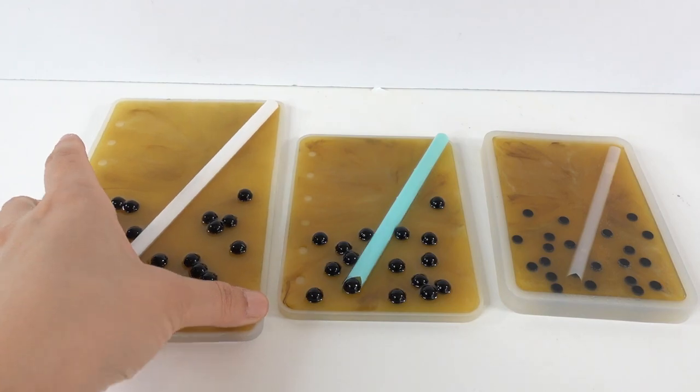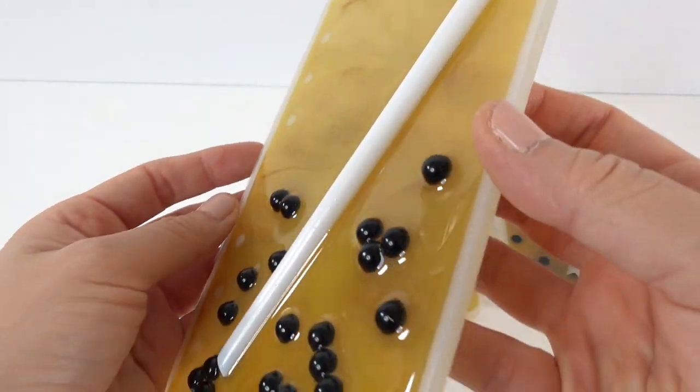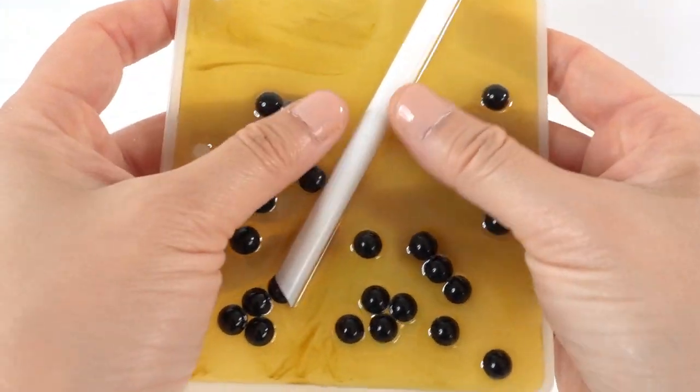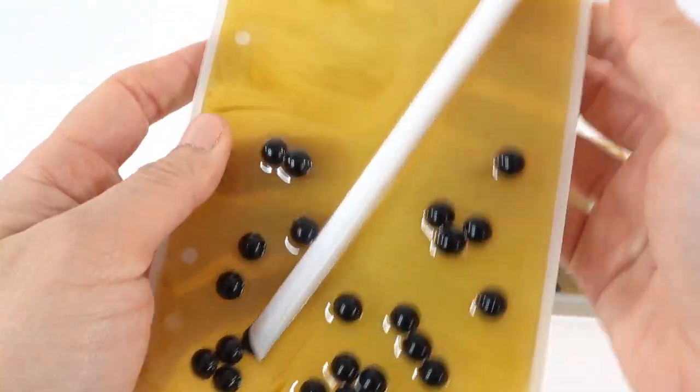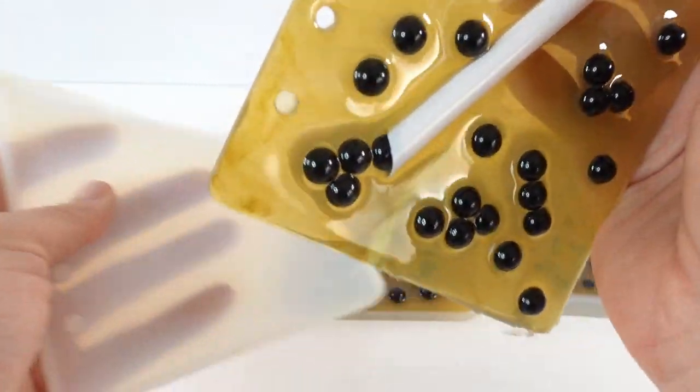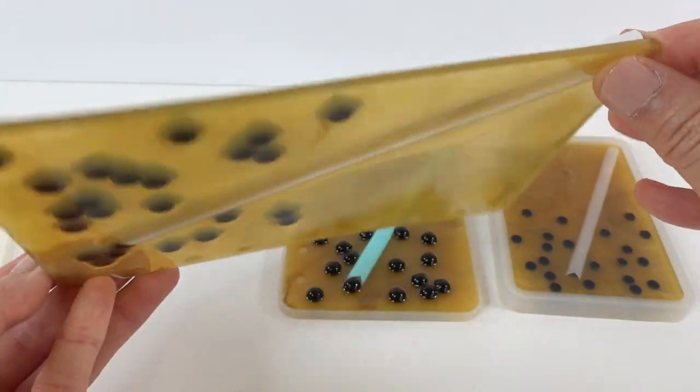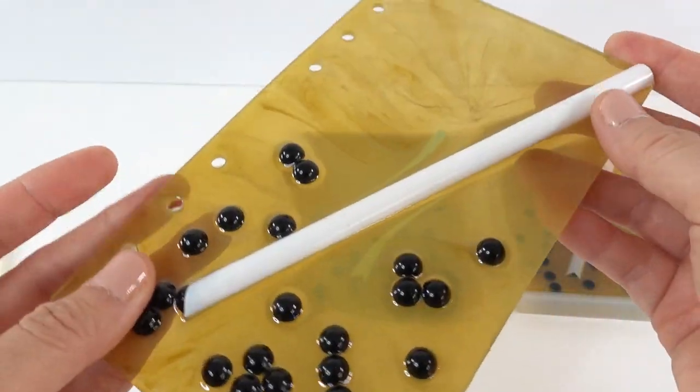Alright, everyone. So it's been a day and our boba is ready. Oh my goodness. Look at this. Isn't this cool? They're so fun to rub too. So here is the larger notebook. Let's go ahead and demold it. So it looks like this from the front. And here it is on the back that's flat.